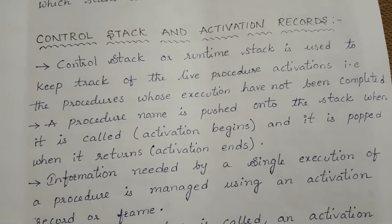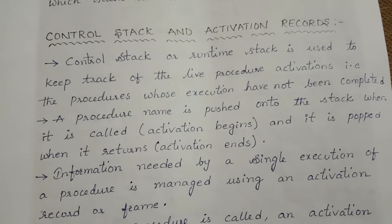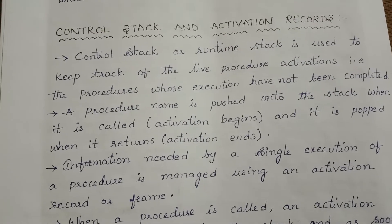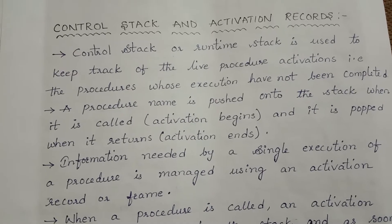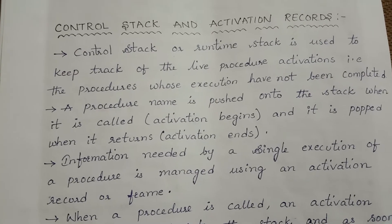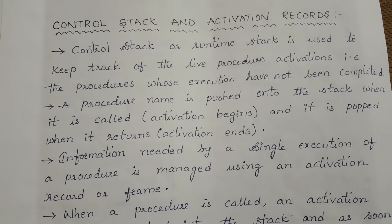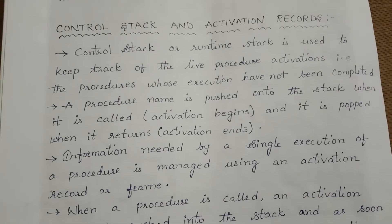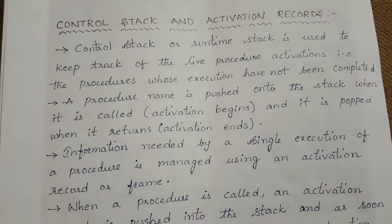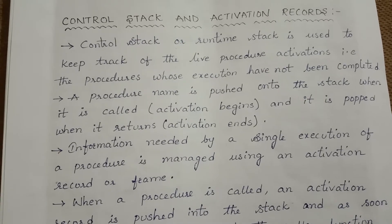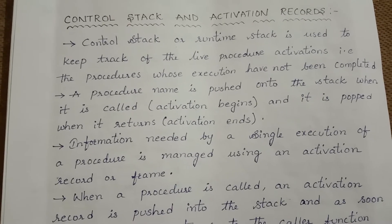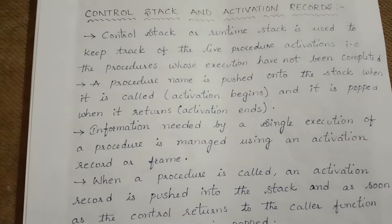The control stack or runtime stack is used to keep track of the live procedure activations — that is, the procedures whose execution has not been completed. A procedure name is pushed onto the stack when it is called, that is when the activation begins, and it is popped when the activation ends.